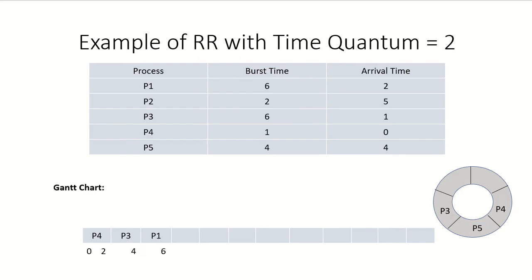Since P1 was at the head of the queue, P1 is given the processor and runs from time four to six. P1 runs for two time units so its remaining time is four. In the meantime P2 has also arrived in the system and joins the ready queue, and P1 after finishing also joins the ready queue.